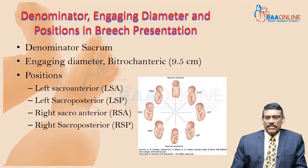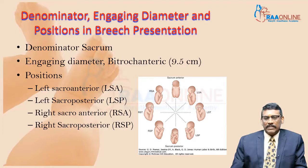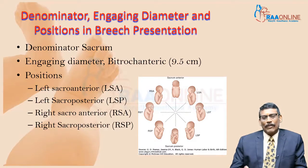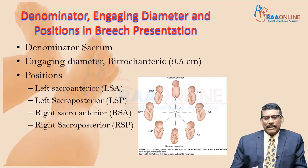The denominator in breech presentation is the sacrum. The engaging diameter is bitrochanteric, which is 9.5 cm — the same as in vertex, though there are many differences between vertex and breech. Positions include left sacro-anterior, left sacro-posterior, right sacro-anterior, and right sacro-posterior.